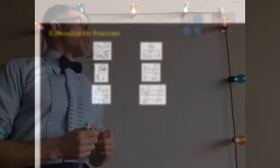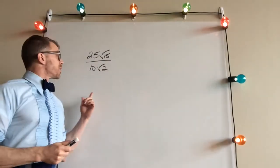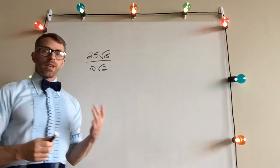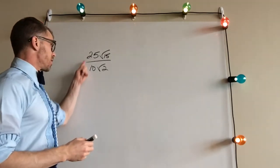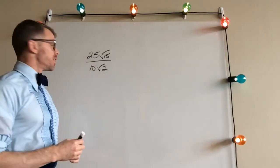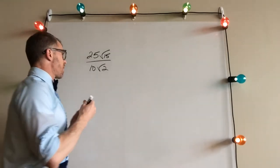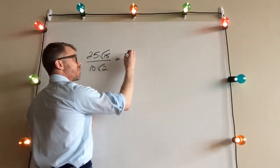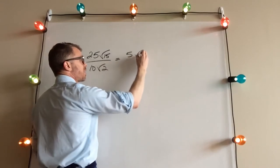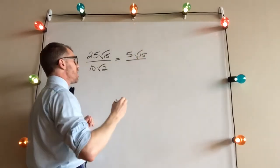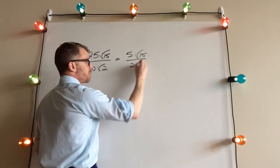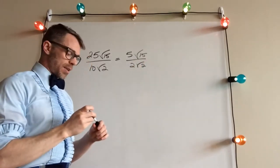Alright, so a couple of questions here — there are six. Before we try to get rid of that radical in the denominator, we can make our life a little easier if we simplify the number parts outside in the front first. We have 25 and 10 — they're both divisible by 5. So 25 divided by 5 is 5, giving us 5√15 in the numerator, and 10 divided by 5 is 2, giving us 2√2 in the denominator.